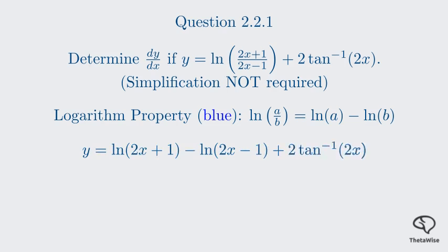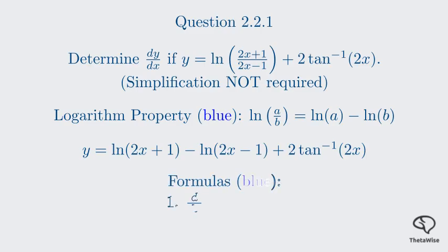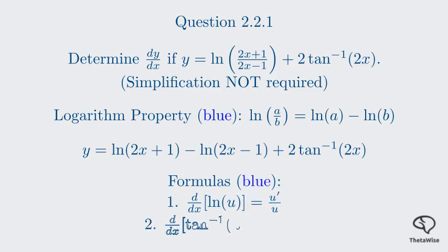Applying this, we rewrite y as the natural log of 2x plus 1 minus the natural log of 2x minus 1, plus 2 times the inverse tangent of 2x. This is now a sum and difference of simpler functions, making differentiation much easier. The formulas we'll need: the derivative of ln of u is u prime over u, and the derivative of tan inverse of u is u prime over 1 plus u squared.